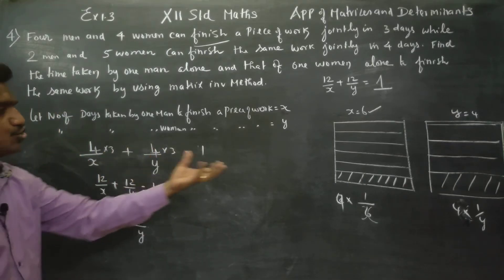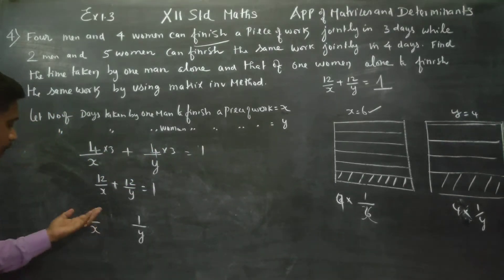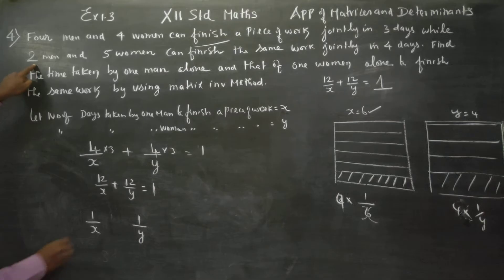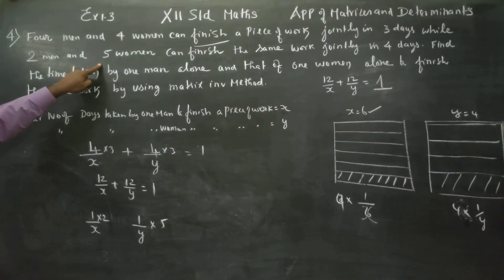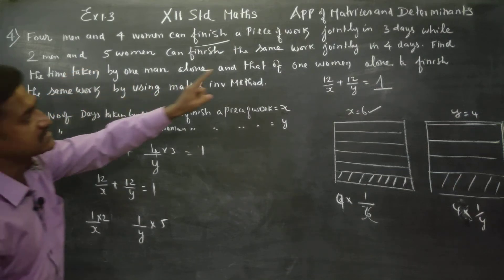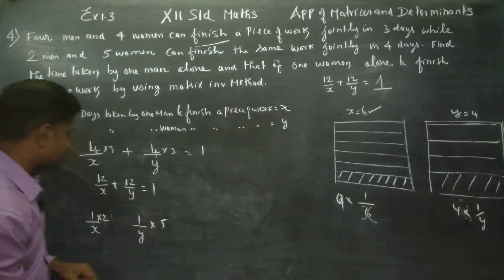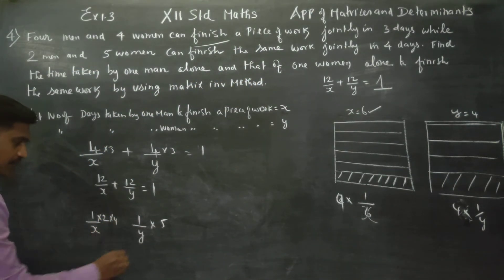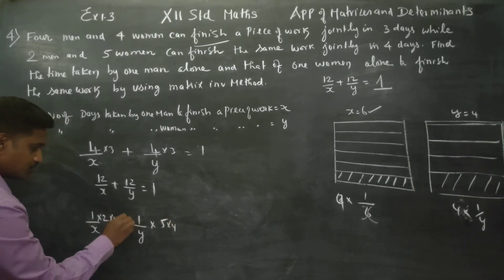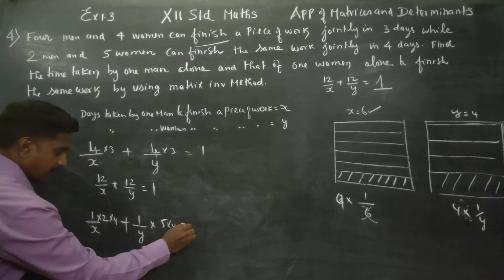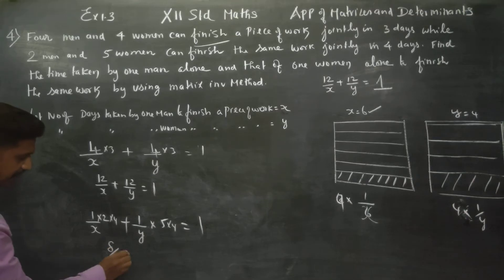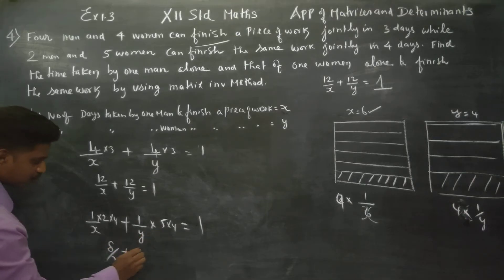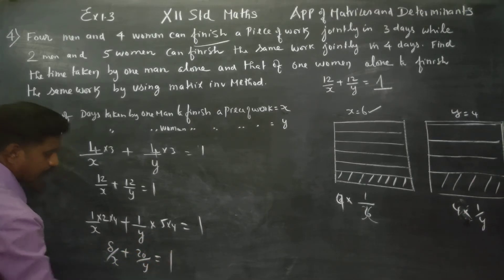For the second condition — 2 men and 5 women finishing the work in 4 days — the capacity is 1 by x for men and 1 by y for women. 2 men for 4 days gives 8 by x, and 5 women for 4 days gives 20 by y. So: 8 by x plus 20 by y is equal to 1.